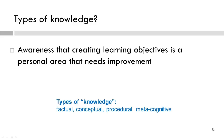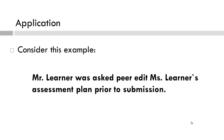What type of knowledge does this next example represent, and why? It is metacognitive because it reflects knowledge of one's own cognition, or what one knows. Meta refers to thinking about thinking. Pause the video and read this example.